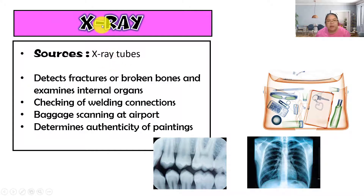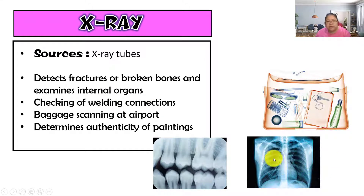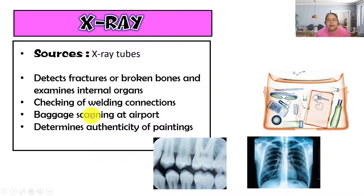The second-to-last is x-ray. Sources come from the x-ray tube. Applications include detecting fractures or broken bones, examining internal organs and teeth. X-rays can also check the welding of pipes underground or detect flaws in concrete walls. A common exam question involves baggage scanning at the airport, which uses x-rays. Another application is determining the authenticity of paintings.